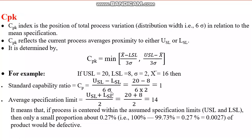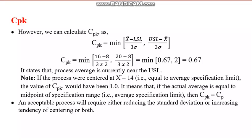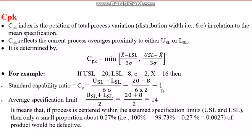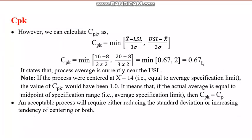Calculating CP: (USL minus LSL) divided by 6 sigma = (20 minus 8) divided by (6 × 2) = 12/12 = 1. So CP equals 1. Now calculating CPK: the minimum of the two values comes to 0.67 and 2 respectively, so CPK equals 0.67.